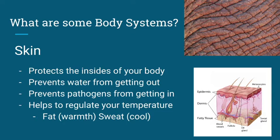One of the most obvious systems that you see on most people is skin. Skin protects the inside of your body — it's there to prevent water from getting out and too much water from getting in. It prevents pathogens like bacteria and viruses from getting in, and it also helps to regulate your temperature. Your skin is just a giant protector. It has layers of different tissues within it: fat tissues keep you warm, glandular tissues allow you to sweat to keep you cool, and various nerves and blood vessels allow you to interact with the world around you.